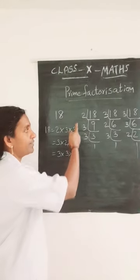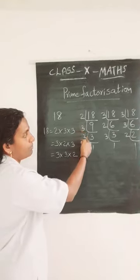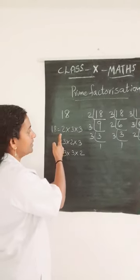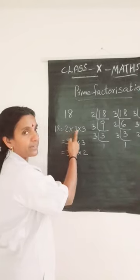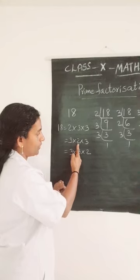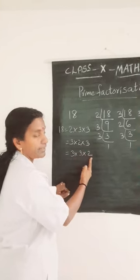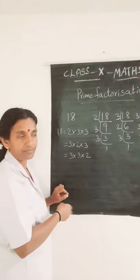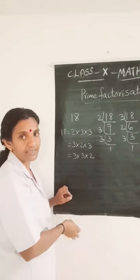So, you have done the prime factorization in 3 different ways. The division you have done in these different orders. But the answer you can see: 2 into 3 into 3. 2 coming 1 time and 3 coming 2 times. The same answer you are getting in all cases — 2 one time, 3 two times. The answer is same.